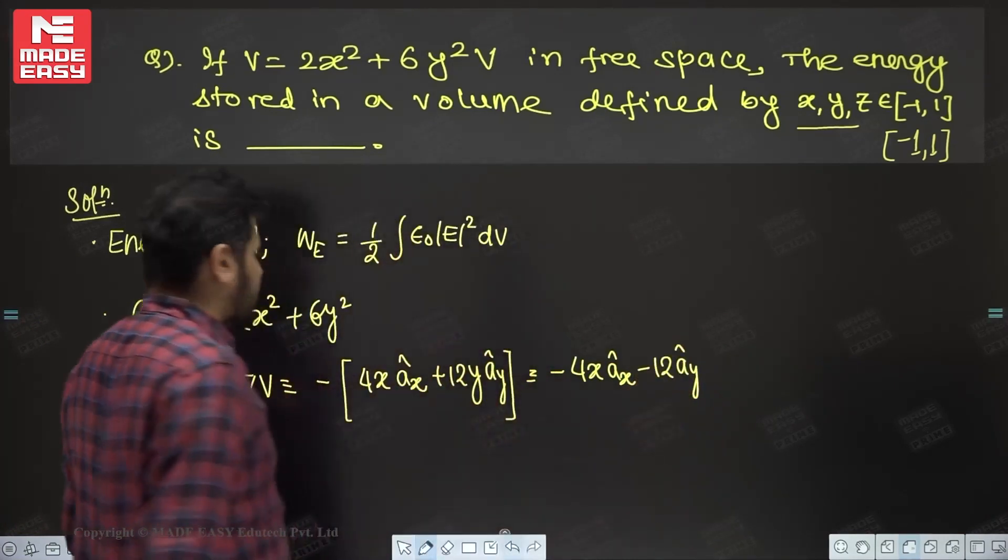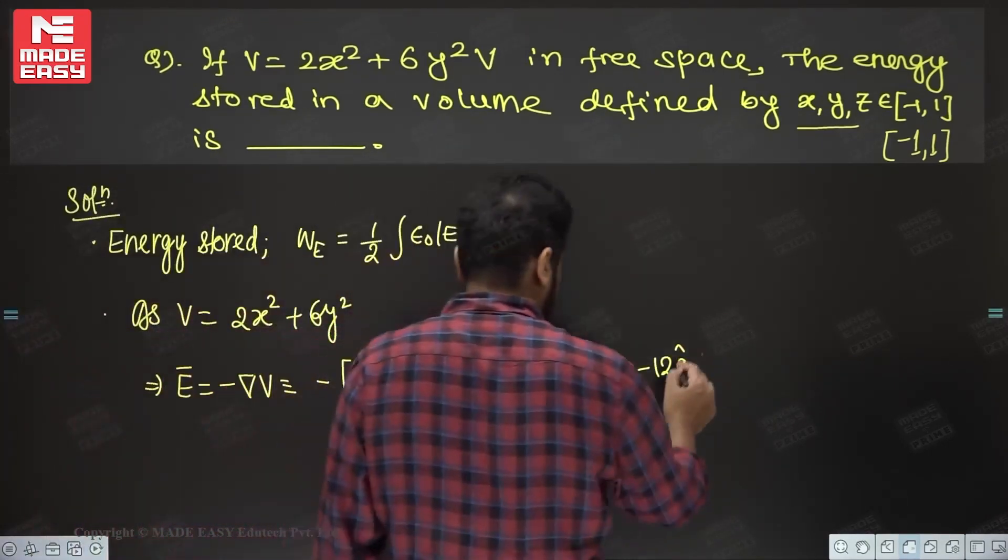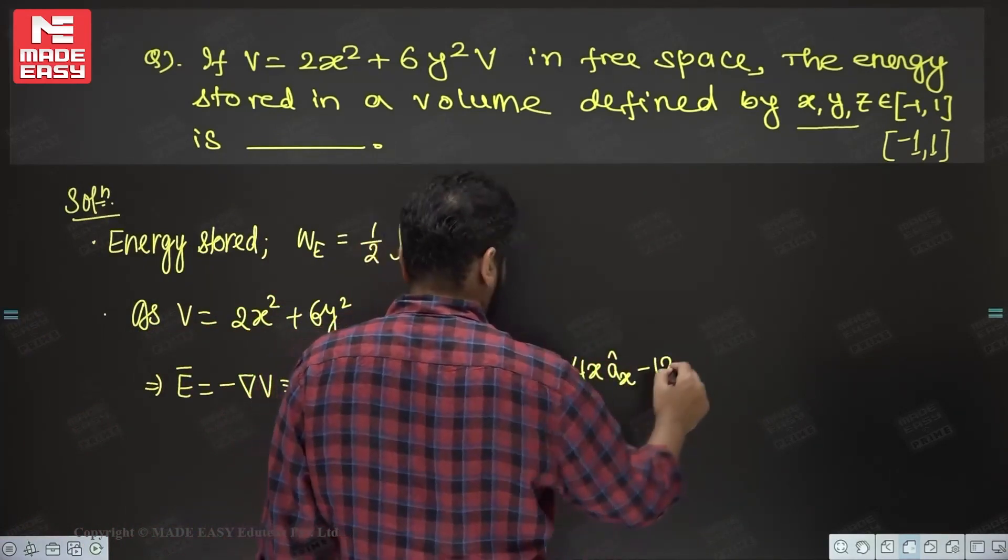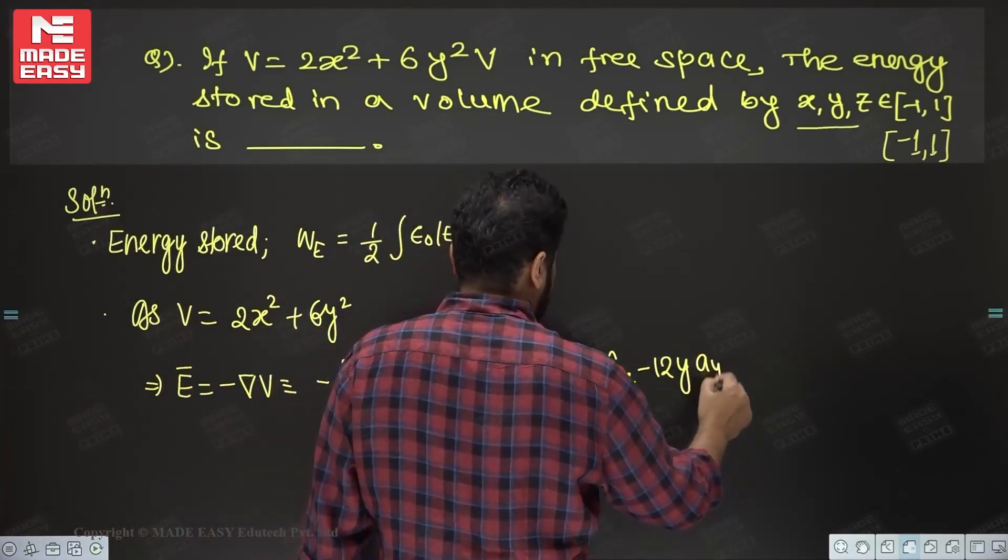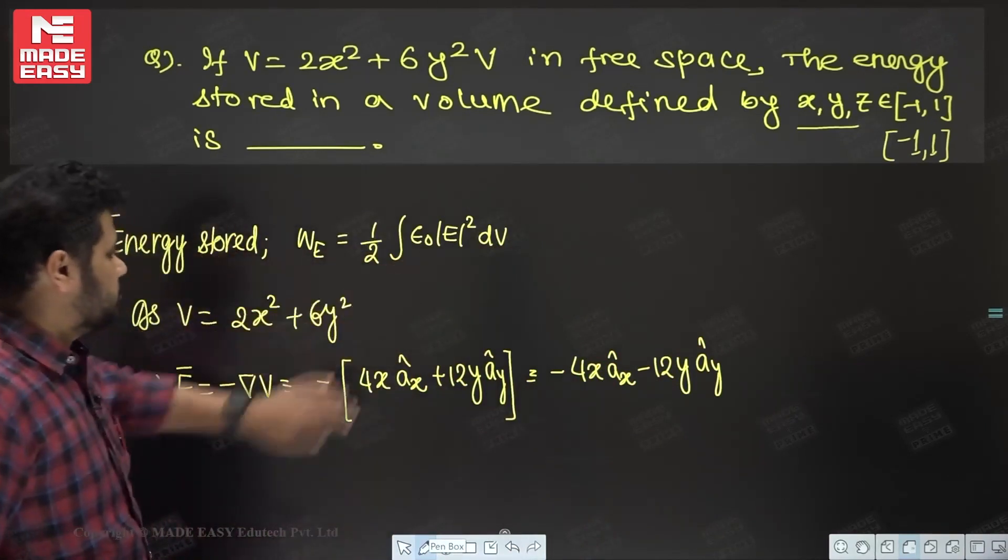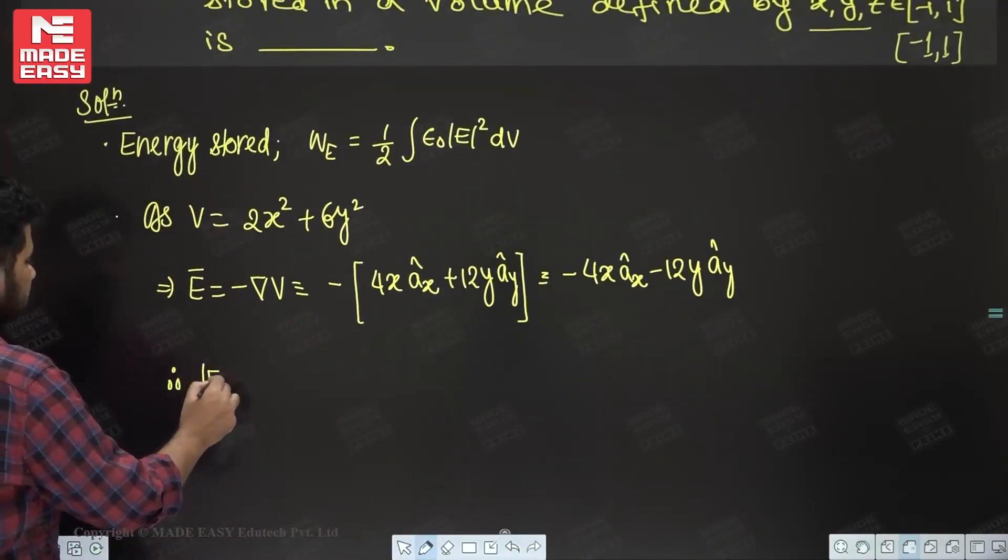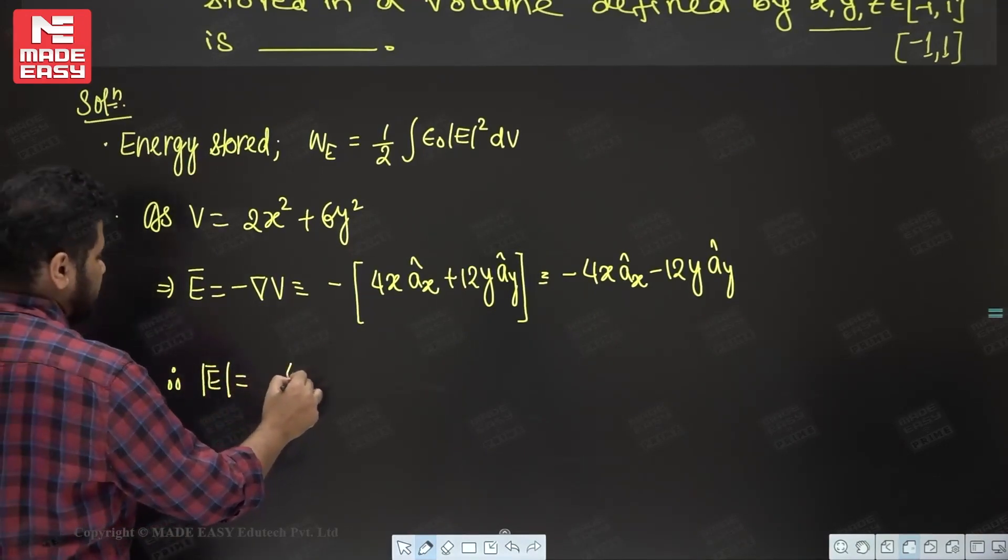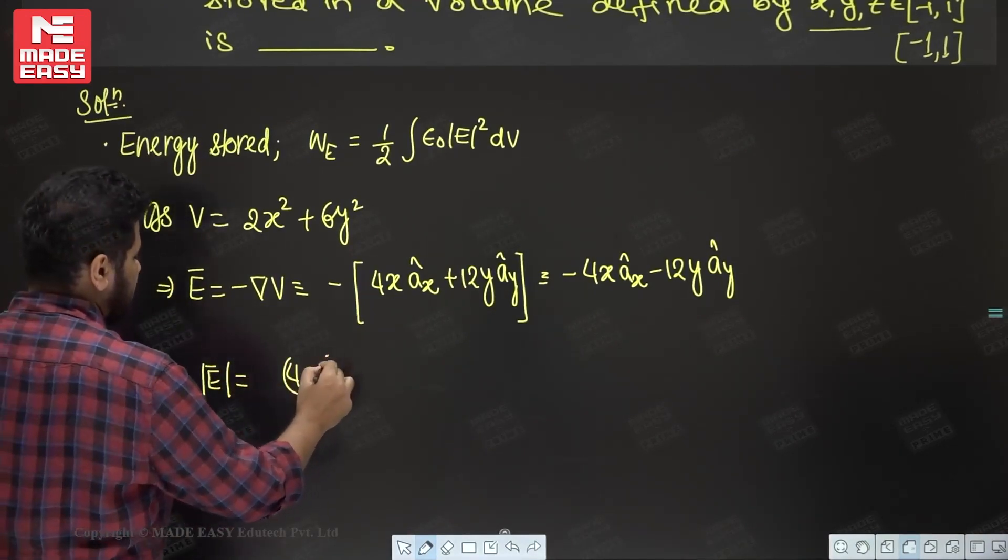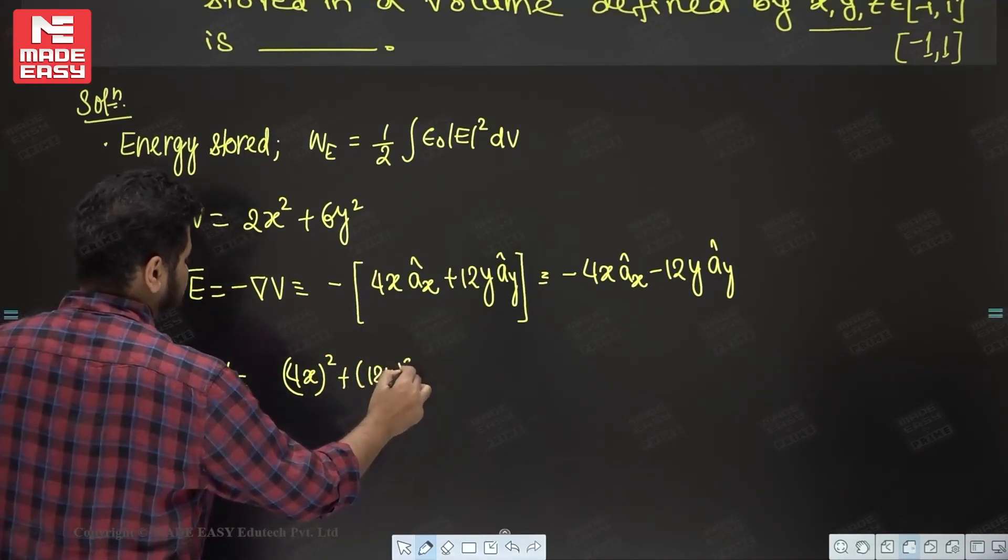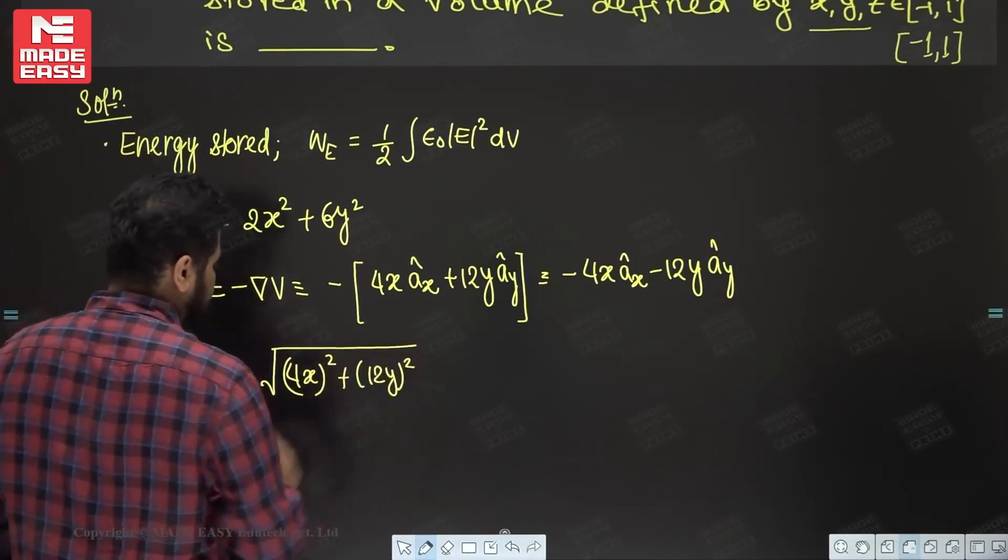Now I want its magnitude. This is 12yAy. Now we want magnitude, so how to get the magnitude? Therefore, mod of E is how much? This is 4x whole square plus 12y whole square, root under.